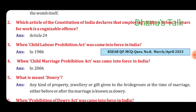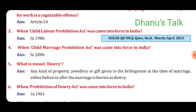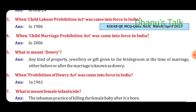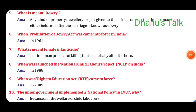Question No. 4: Answer: In 2006. Question No. 5: What is meant by dowry? Answer: Any kind of property, jewelry, or gift given to the bridegroom at the time of marriage, either before or after marriage, is known as dowry. Question No. 6: When did the Prohibition of Dowry Act come into force in India? Answer: In 1961. Seventh question: What is meant by female infanticide? Answer: The human practice of killing a female baby after it is born.